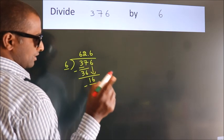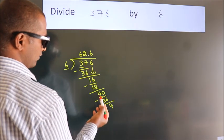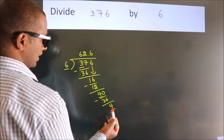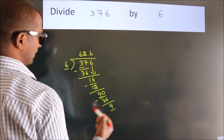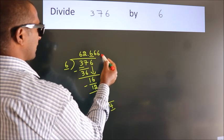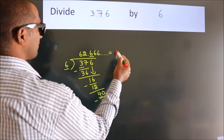Now you observe, we had 4 here and we got 4 again. That means this number keeps on repeating. So this is our quotient.